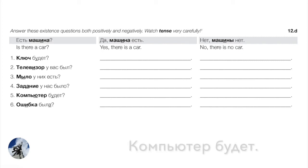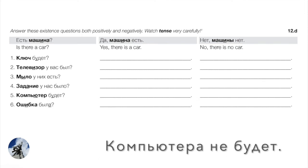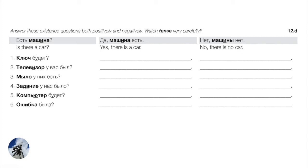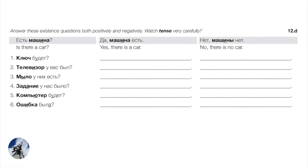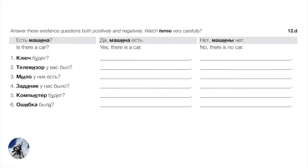Number five — Компьютер будет? Will there be a computer? Positive: Да, компьютер будет. Negative: Компьютера не будет. Number six — Ошибка была? Was there a mistake? Positive: Да, ошибка была. In colloquial Russian you'd just say была without repeating ошибка. Negative: Ошибки не было. In real spoken Russian, normally you'd avoid repeating things needlessly.